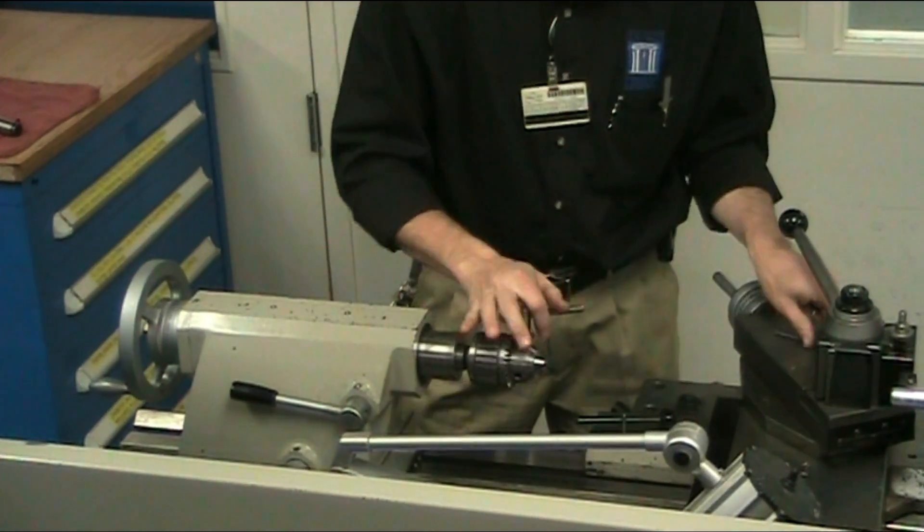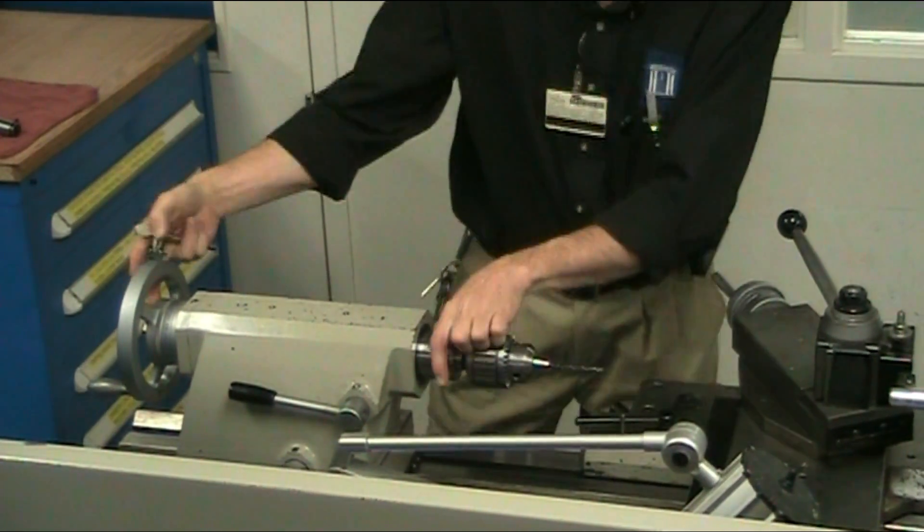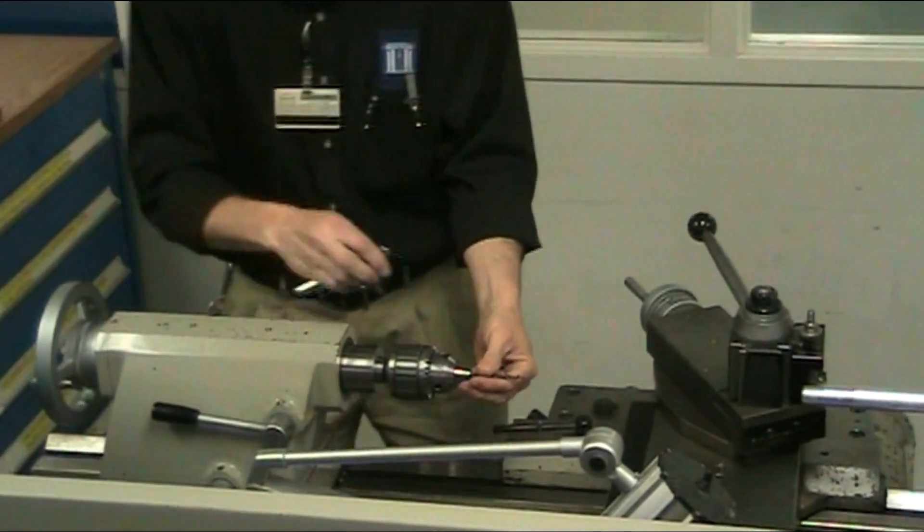Loosen up your chuck key. If you want to put in a center drill and then change it to a drill, you could do that. Do the same thing: move it up, tighten it up, do your drilling. That's one use of a tail stock.